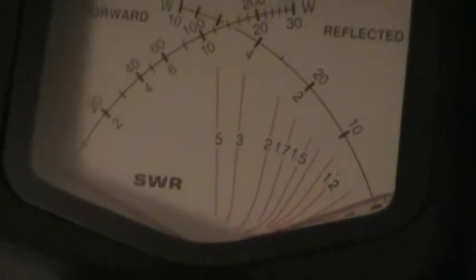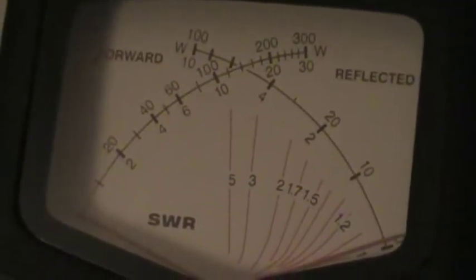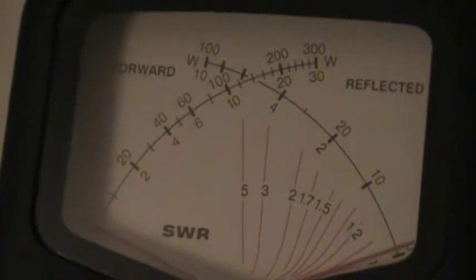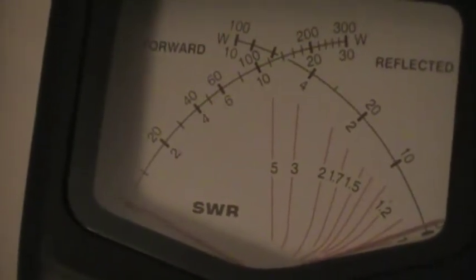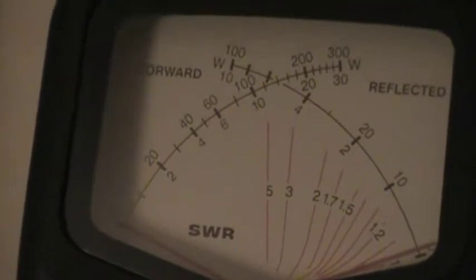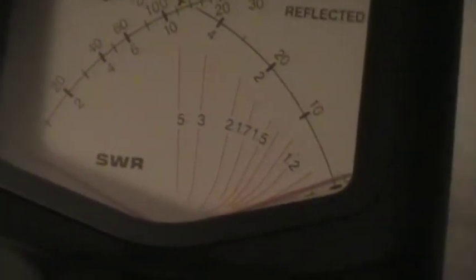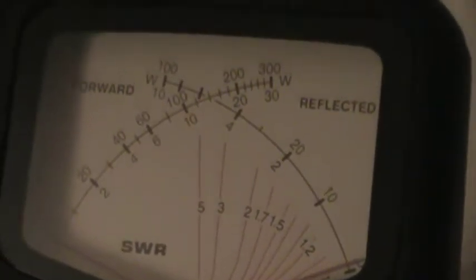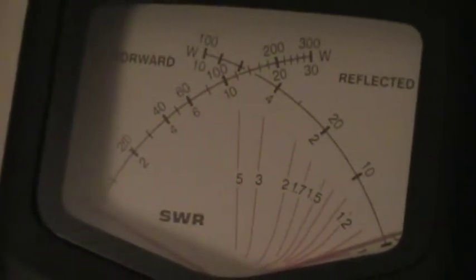So what we could do is we could key up in the high power scale and watch the forward power. So it's looking to me like about 38 watts of forward power. Now if we look at the needle on the other side there, that's for reflected power. You see it's not even moving at all. Okay, so that means we have good SWR. Now let's say we want to take a better reading.